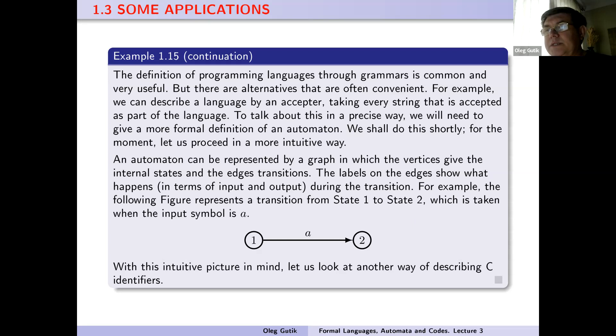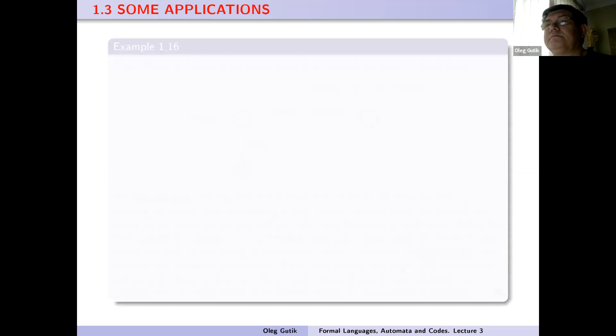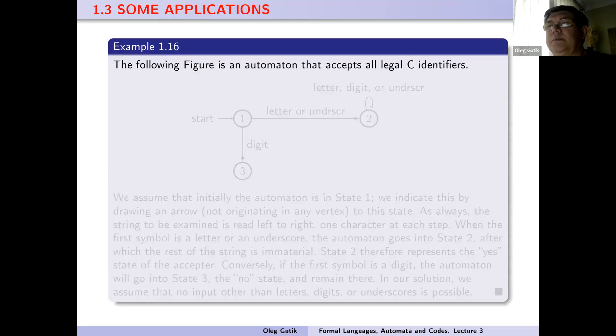With this intuitive picture in mind, let us look at another way of describing C identifiers. The following figure is an automaton that accepts all legal C identifiers.